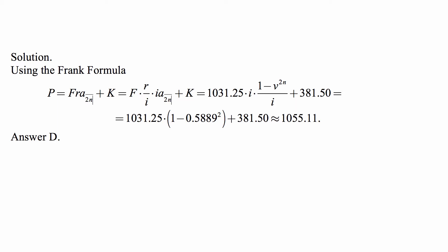And then F times V to the N over I, so we square that to get V to the 2N, and now everything is given, we just do the calculation. And it comes out to be 1055.11.